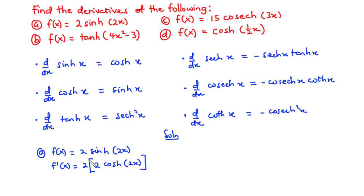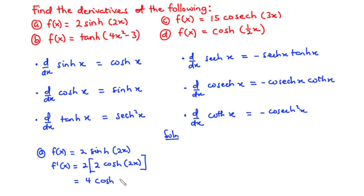So first of all, you are going to repeat the 2. And then you differentiate the argument, that is 2. When you differentiate 2x with respect to x, you have 2. And then when you differentiate sinh, you have cosh. So let's simplify this — we have 2 times 2, which is 4, and so we have 4cosh(2x).